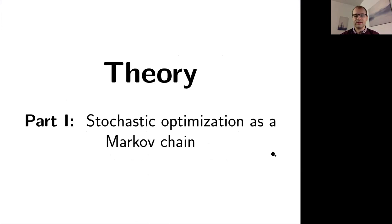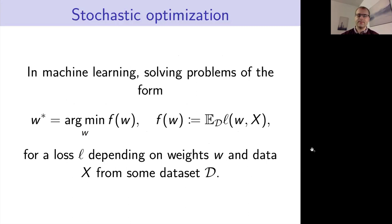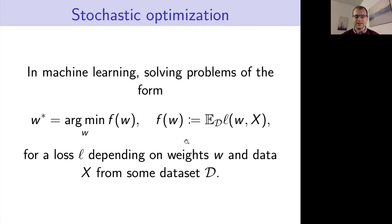Let's get into the theory. To begin with, we'll look at how we can formulate stochastic optimizers as Markov chains. In machine learning, we're typically trying to solve problems of the following general form: minimizing some objective function f, which we consider to be an expectation of some loss function over a dataset. We're allowing the dataset to be potentially infinite, but it can also be finite — in which case this expectation can just be an average, and we can recover empirical risk minimization.